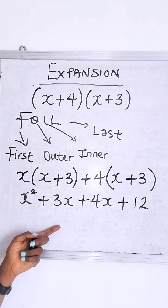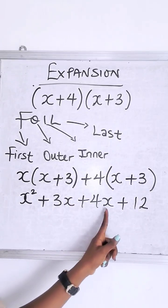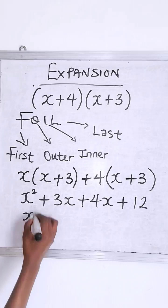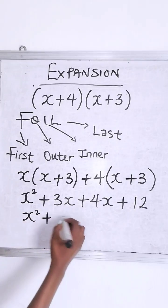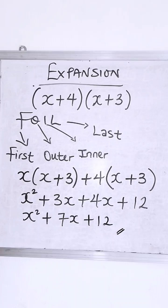So you have to further simplify. These two have the same x, right? They look alike. So you just further simplify x squared plus 3 plus 4 is what? 7x plus 12, and then you stop here.